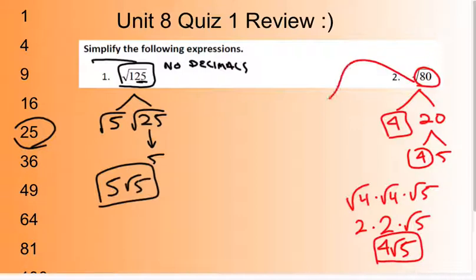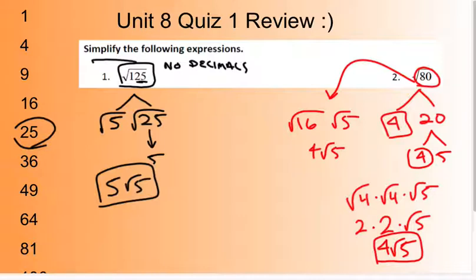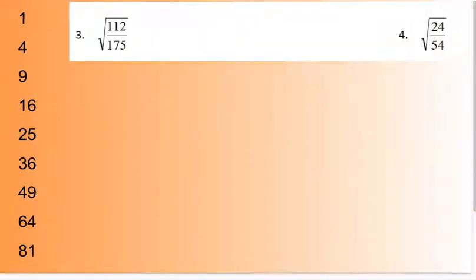The other way to realize this is: if you're clever, you can see that 80 splits into square root of 16 and square root of 5, giving you 4 square root of 5. Now for number 3, we have 112 over 175.